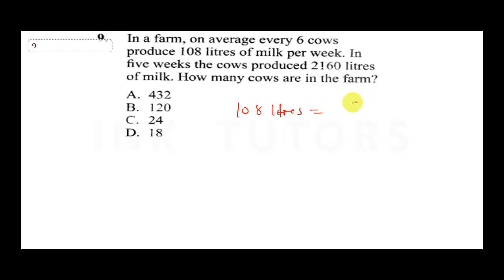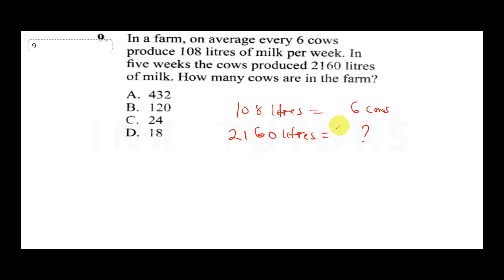In this question, 108 liters can be produced by 6 cows every week. The number of weeks is actually irrelevant here. The question is: how many cows can produce 2,160 liters? If 108 liters can be produced by 6 cows, to get 2,160 you do 2,160 times 6 divided by 108.